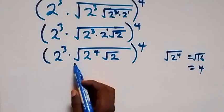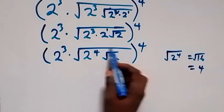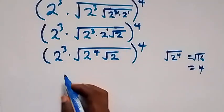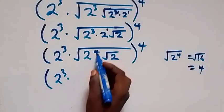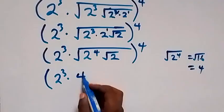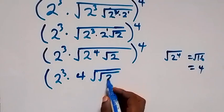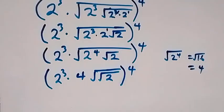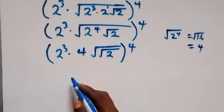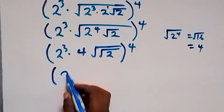So now this square root outside also affects root two, so root two now has two roots. This can be written as two raised to power three times four, then root two — also inside that root we have root two — then all raised to power four.